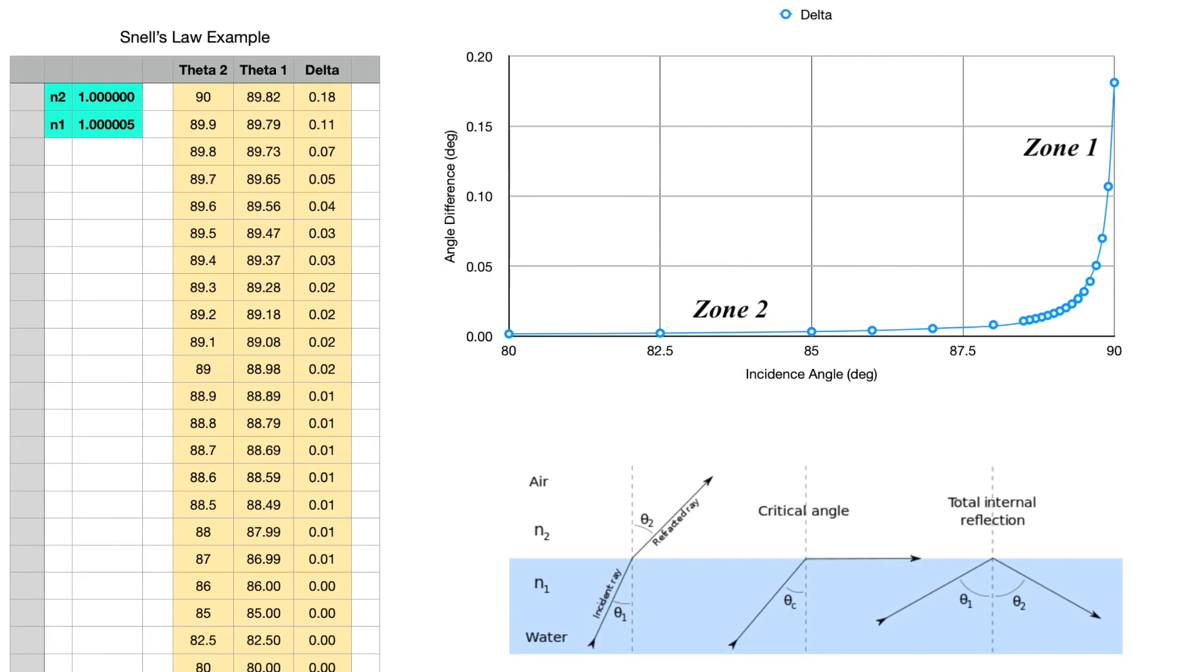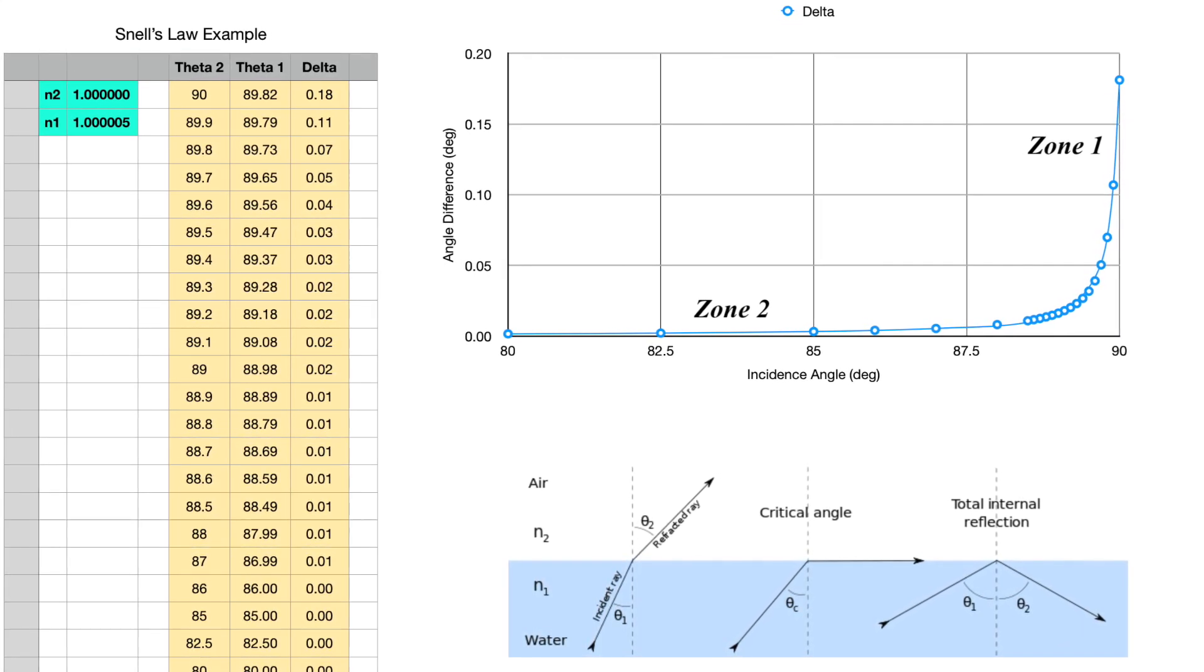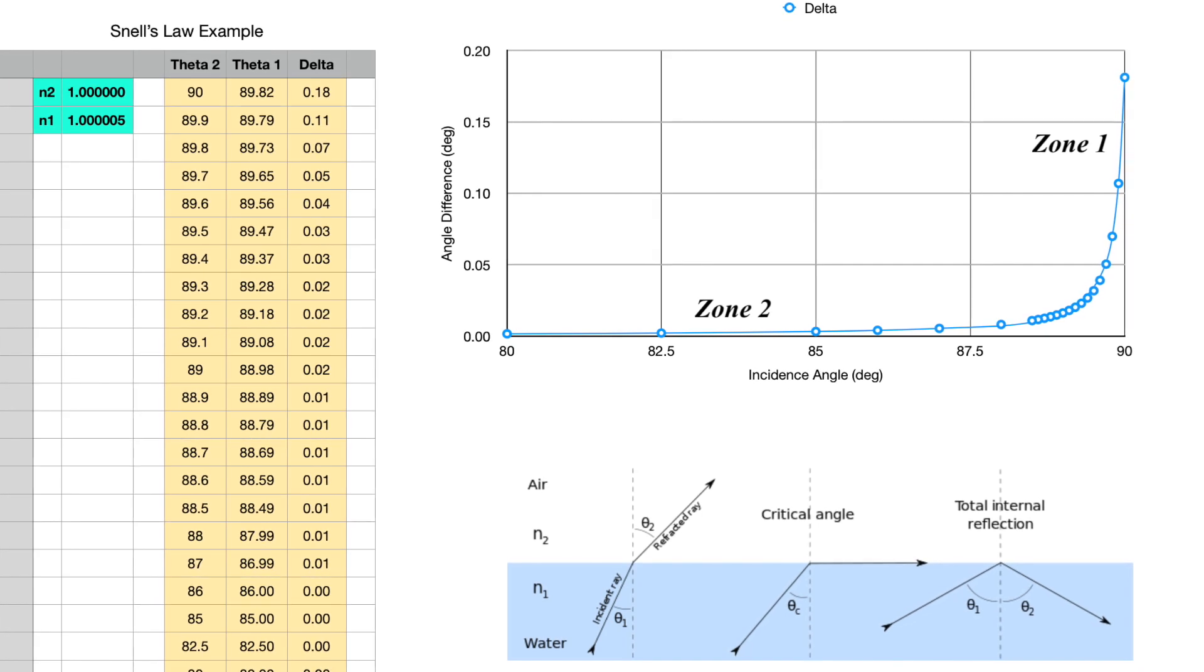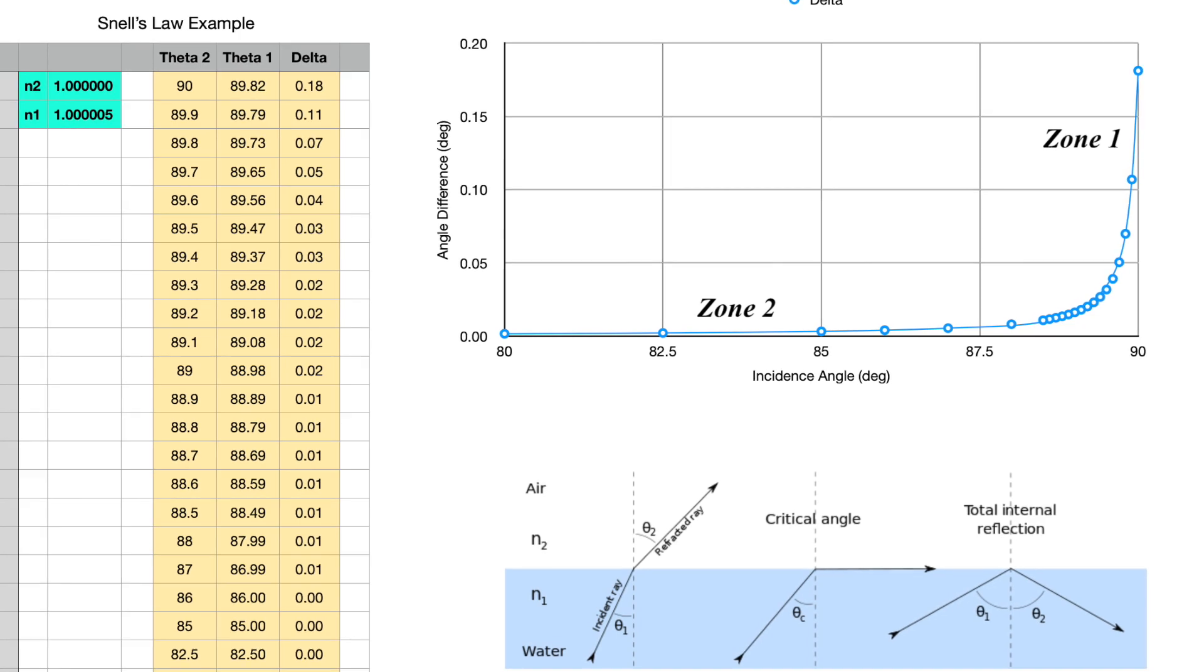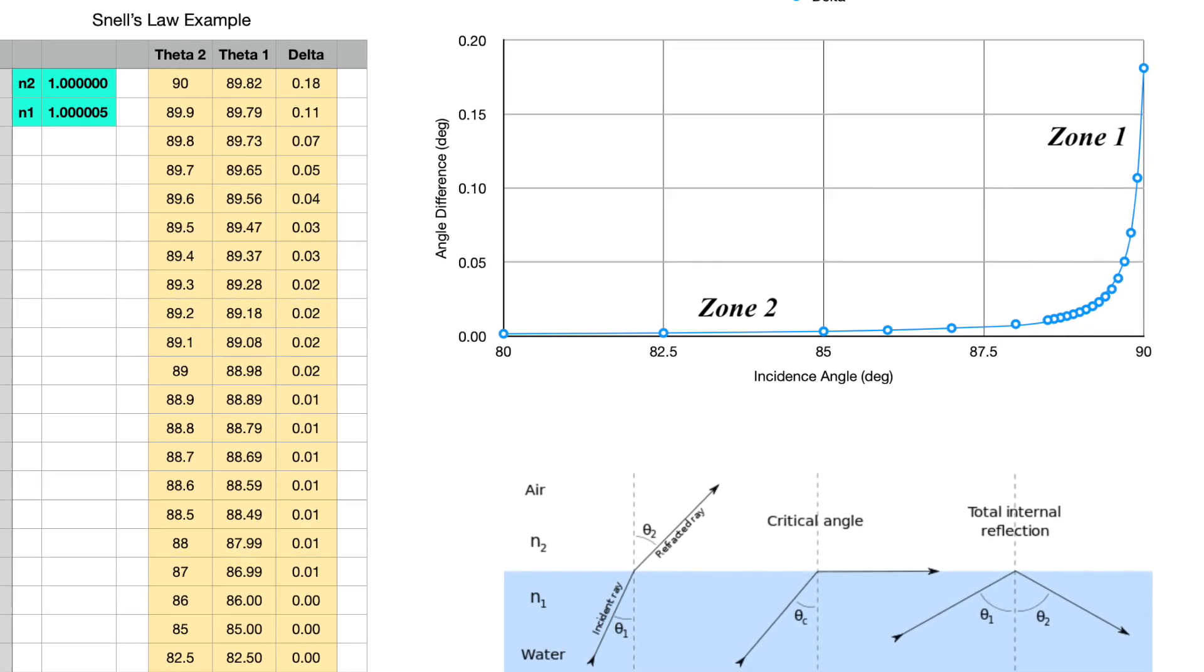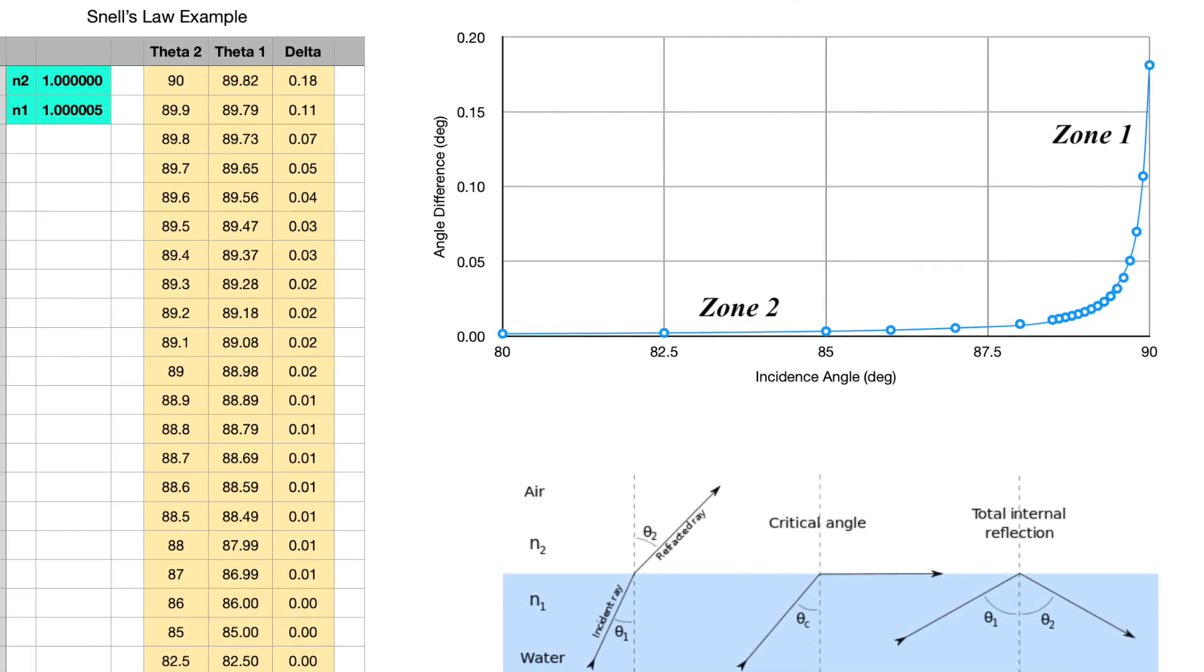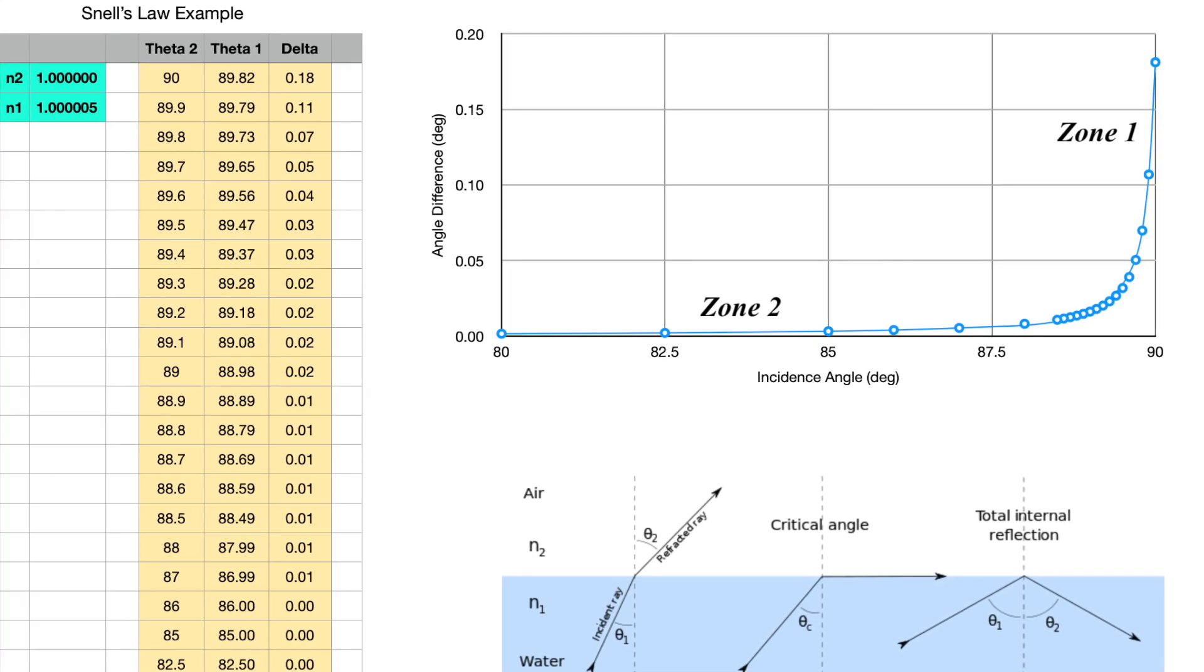As the propagation is almost parallel to the surface, the angle difference takes off in Zone 1. And when it's propagating at a steeper angle towards the surface, we're in Zone 2.